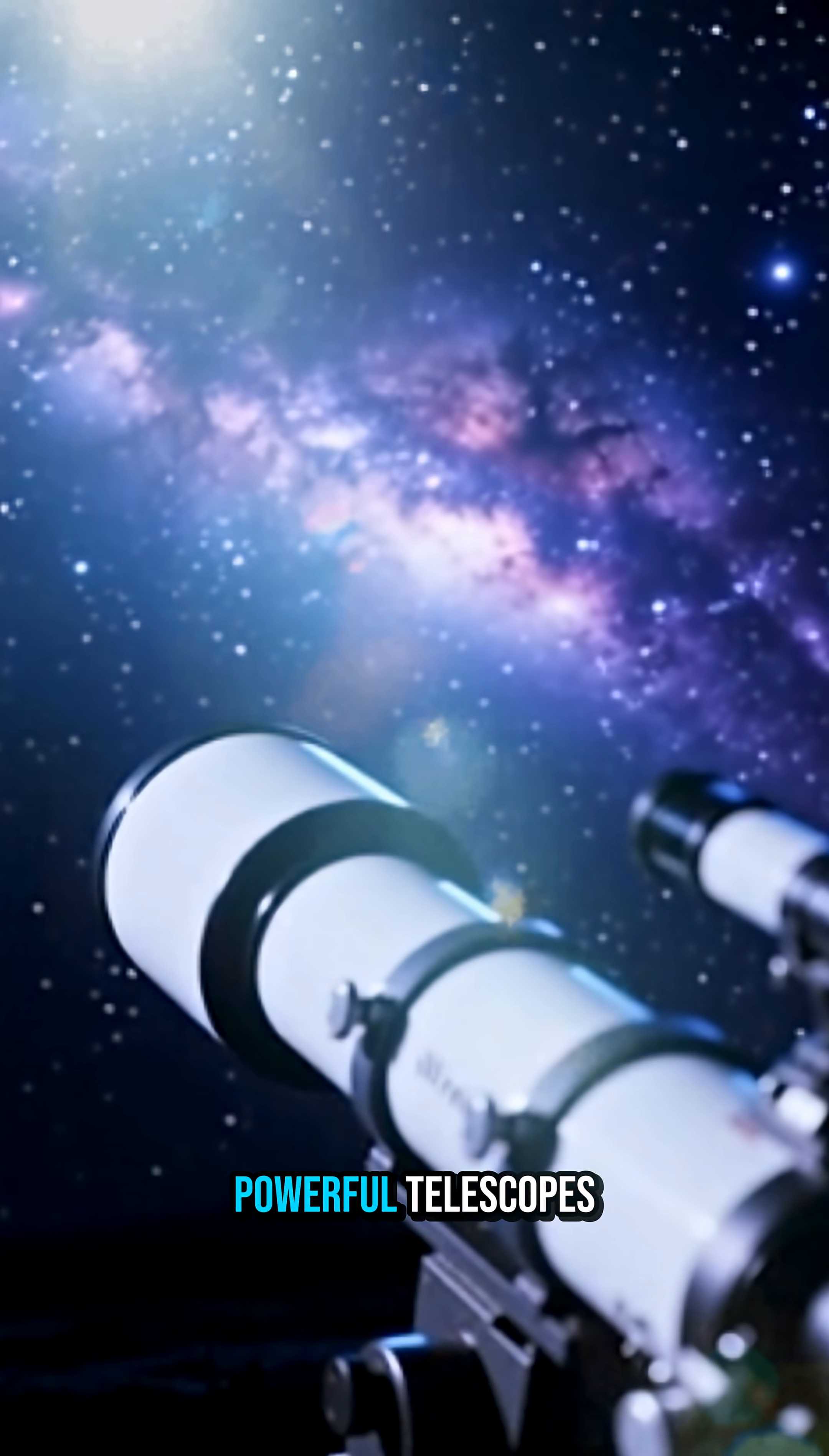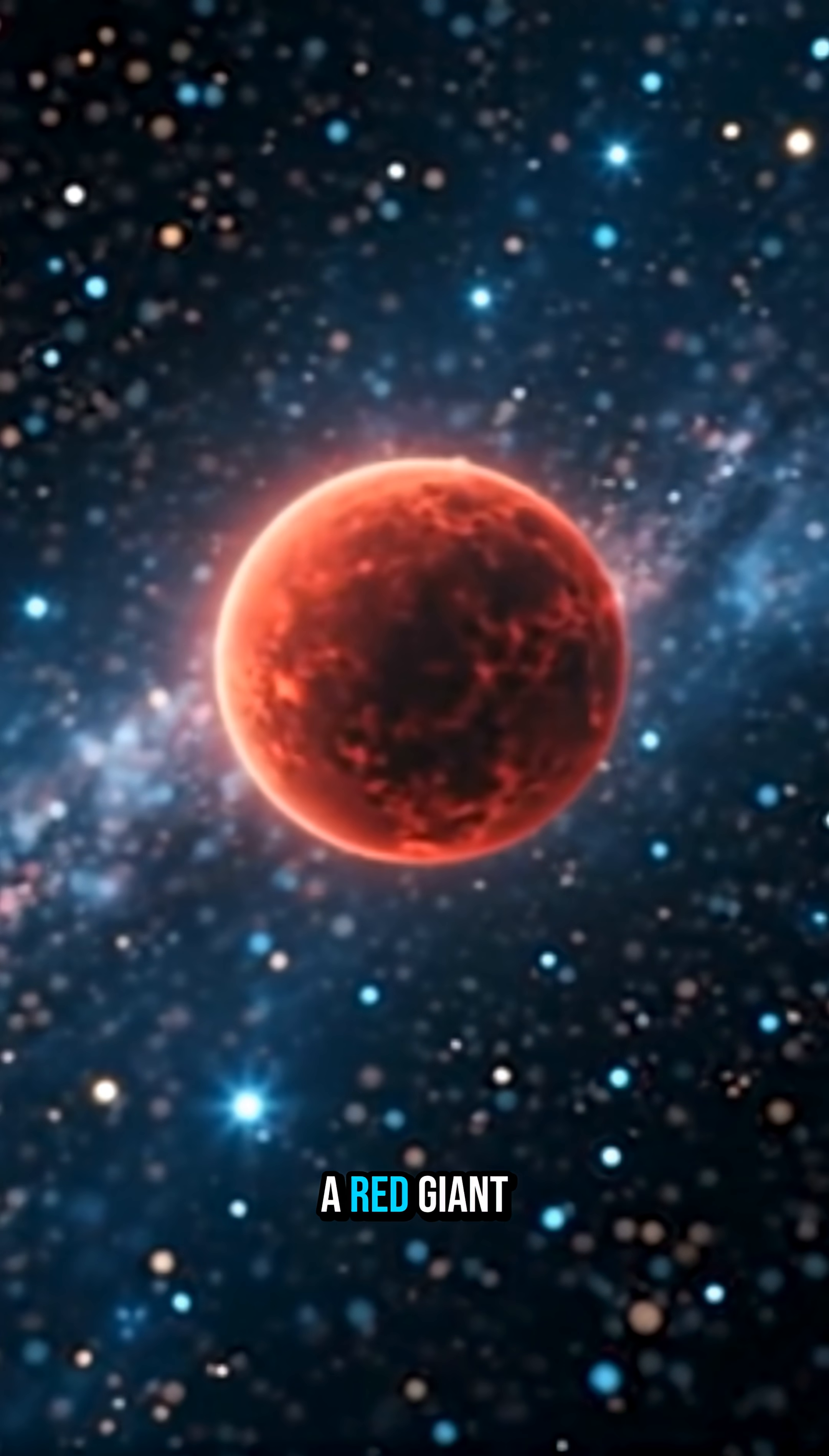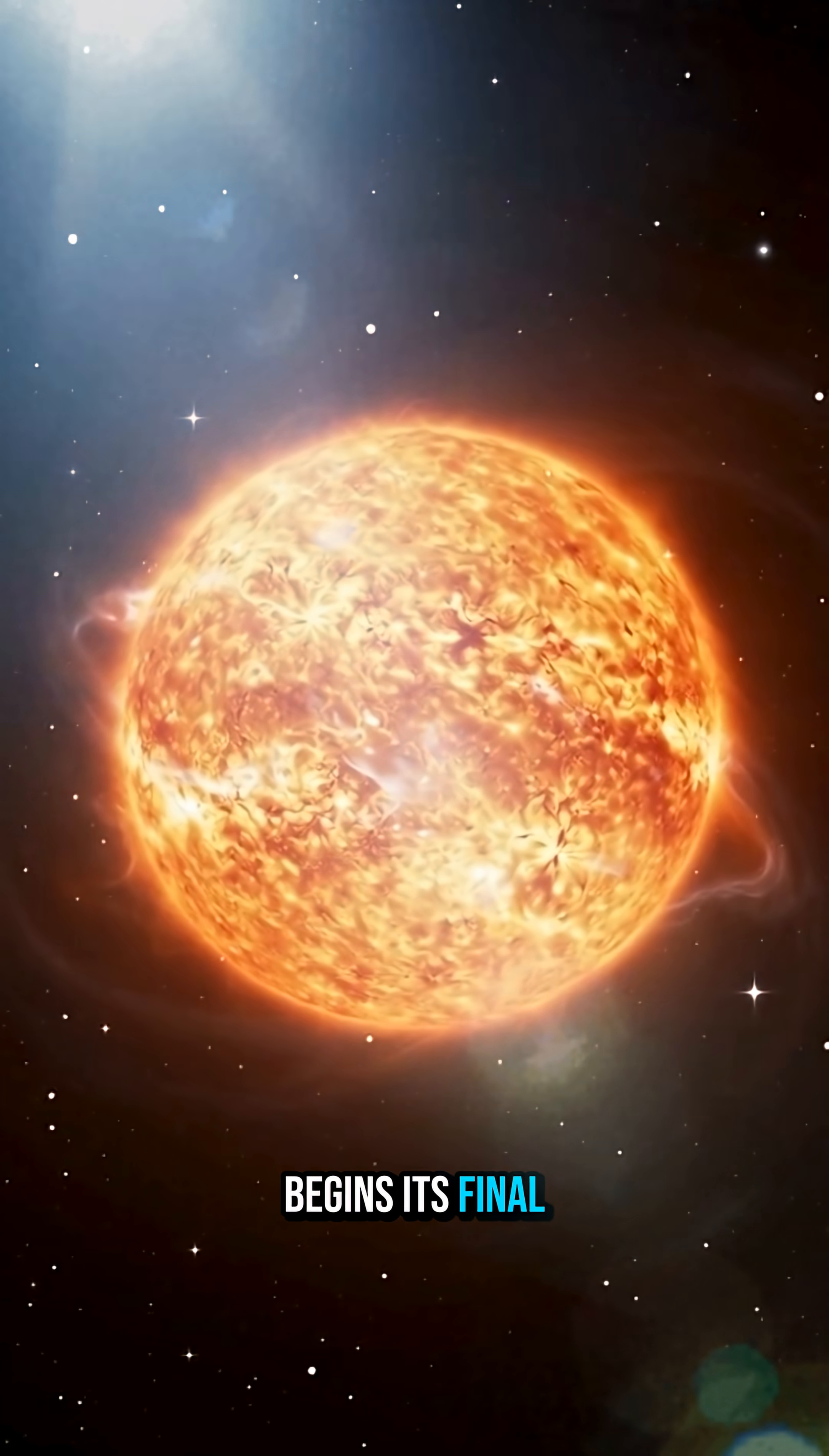Astronomers have turned powerful telescopes toward a neighboring star called W. Hydrae, a red giant about 320 light-years away, to study what happens when a star like our Sun begins its final chapter.